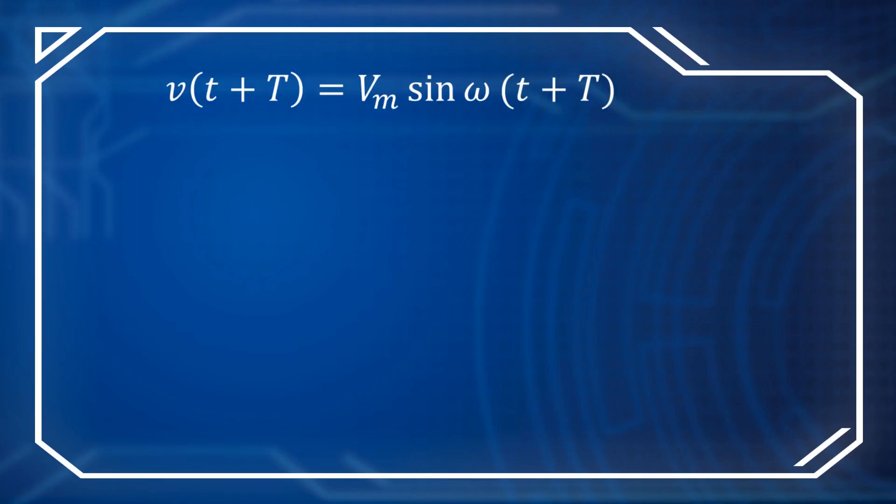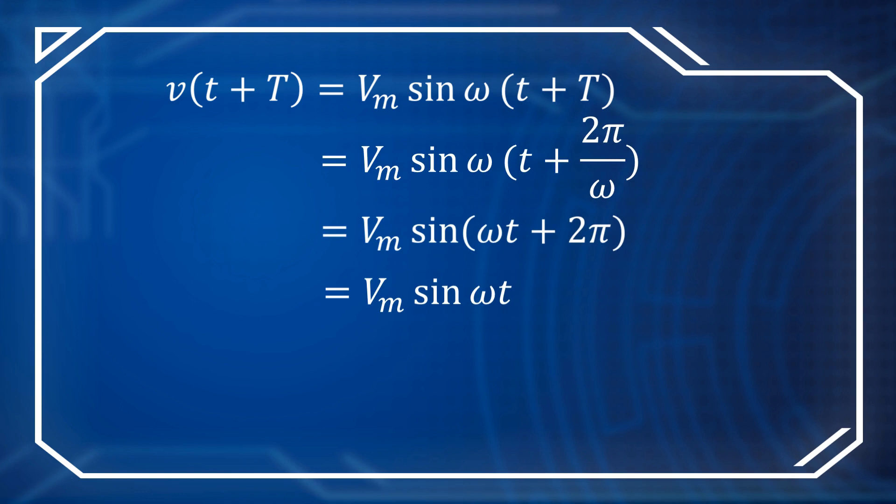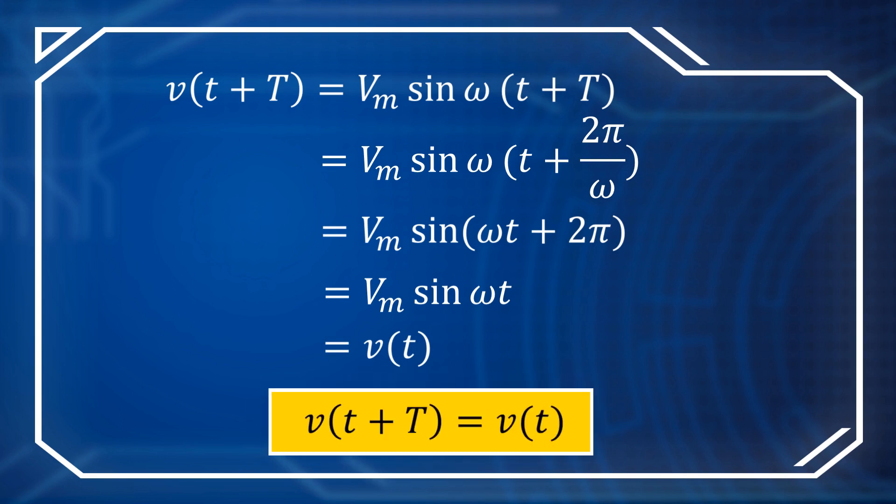And we can represent this using mathematical functions. v(t + T) equals Vm multiplied by sin(ω(t + T)), where T equals 2π/ω. We put it inside the equation and we get Vm multiplied by sin(ωt) equals v(t). So, v(t + T) equals v(t). That's why the sinusoid is a periodic function.